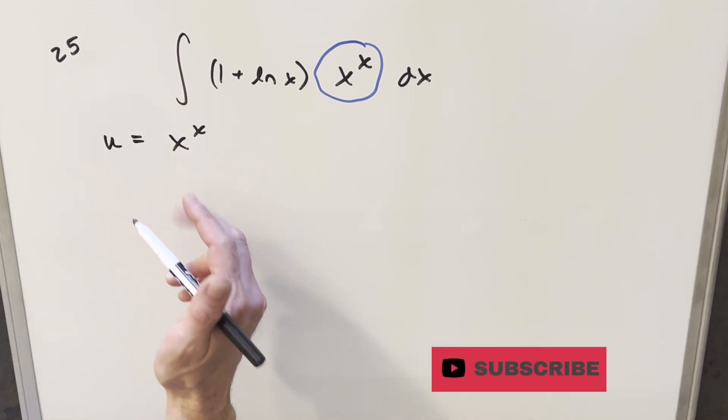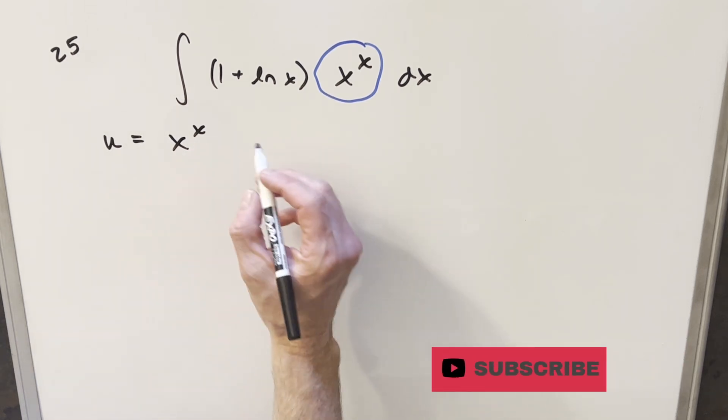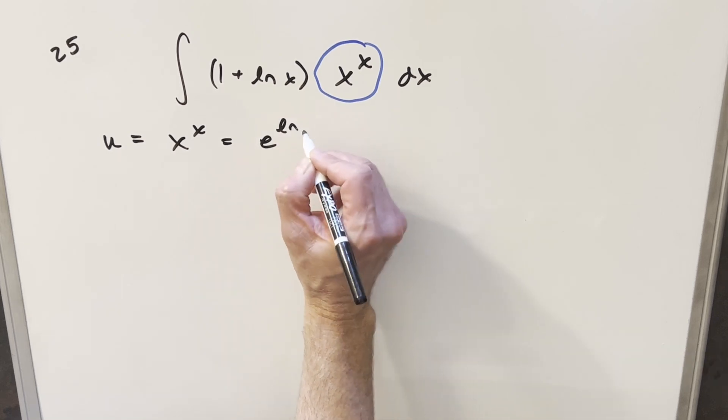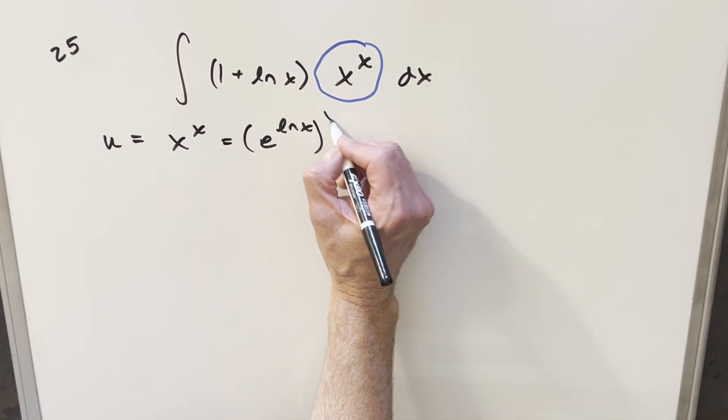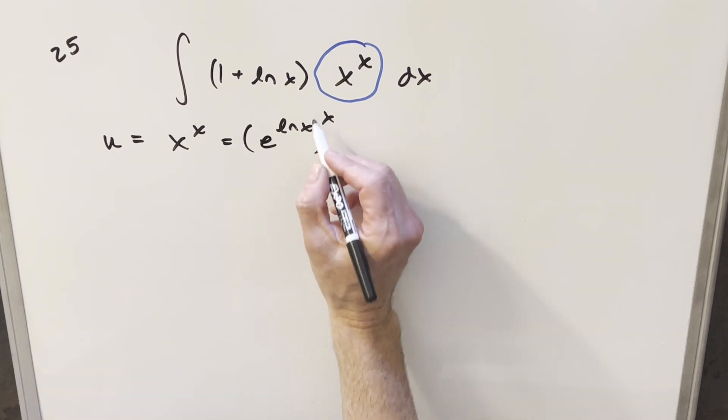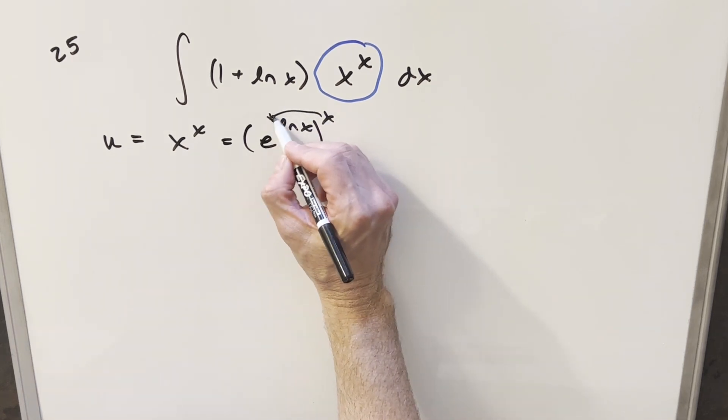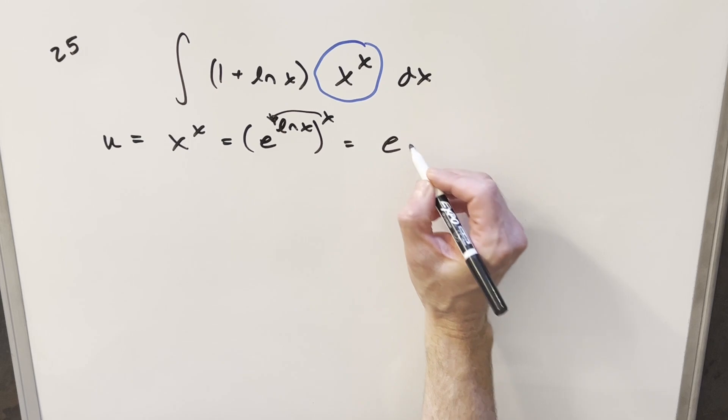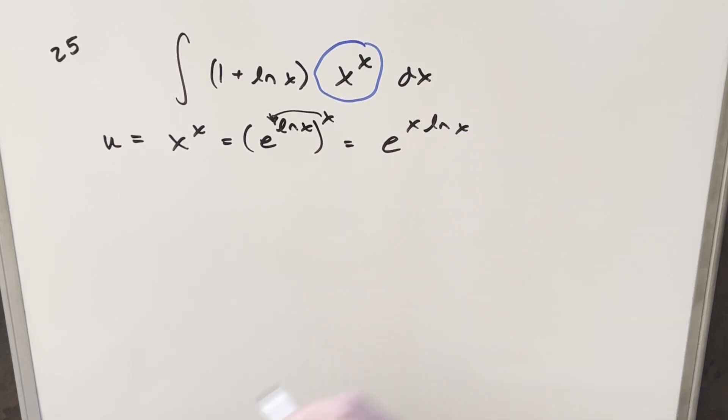But before we take the derivative, I want to rewrite this. So for the base x, I'm going to write that base, I can write this as e to the ln x raised to the x. But then we'll just distribute this in here so we can actually rewrite this. We can write this as e to the x ln x.